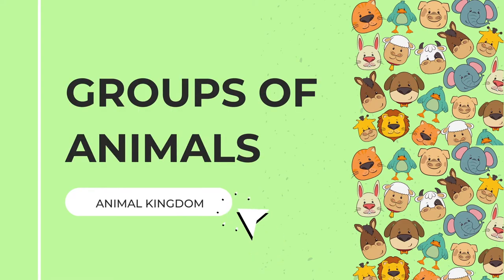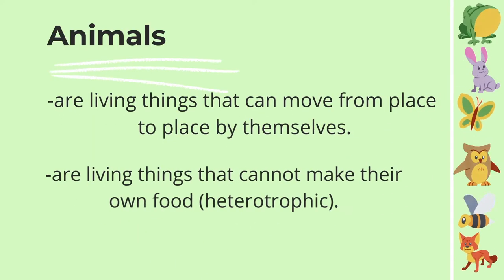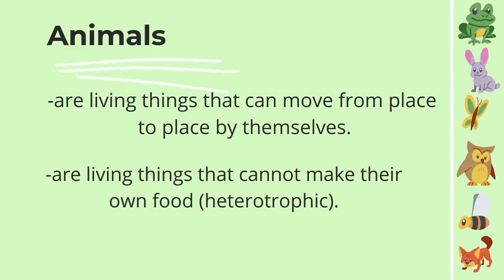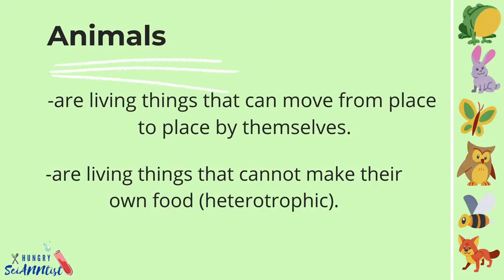In this video, we will learn the groups of animals. Animals are living things that can move from place to place by themselves. They cannot make their own food, so they need to feed on other living things.